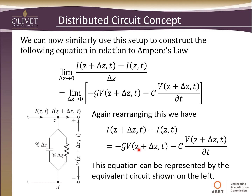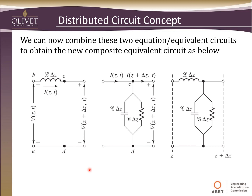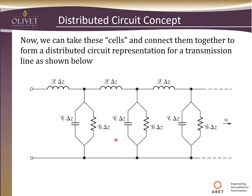Now we've got Faraday's law and Ampere's law both solved for these differential lengths. The beauty is we can now combine these two equations and their equivalent circuits. Taking the one from Faraday's law and the one from Ampere's law and putting them together, we have this new differential unit from z to delta-z that takes into account the characteristics of the transmission line. To build a transmission path, we take these cells and connect them together to form a distributed circuit representing our transmission line — this is what we're dealing with when transmitting an electromagnetic wave down a long transmission line.